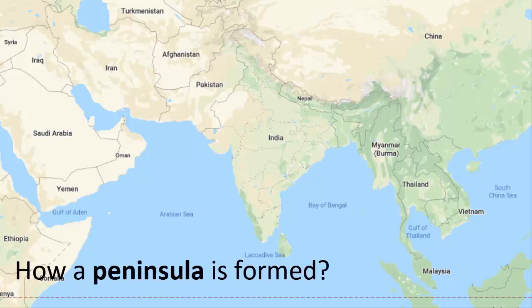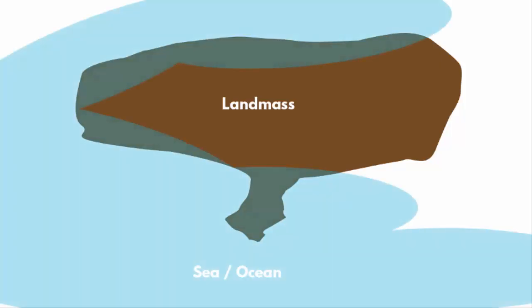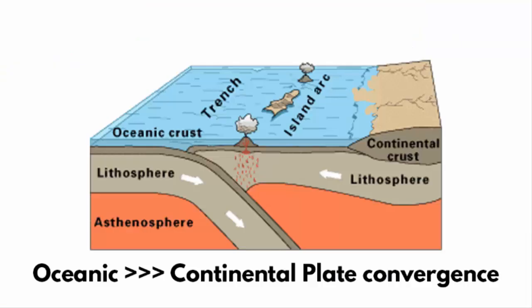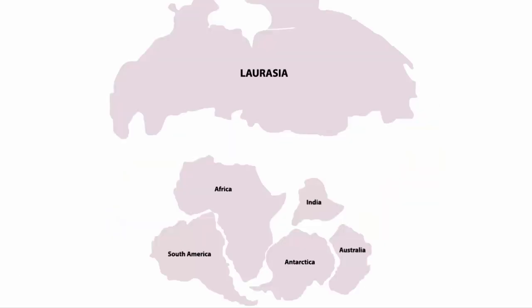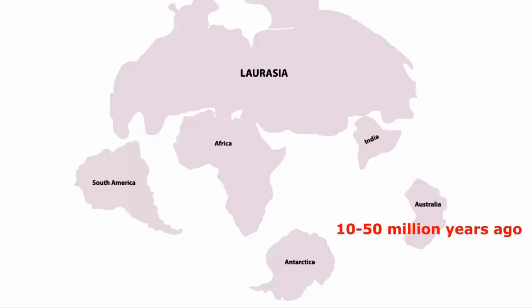Now we come to the main question. How are peninsulas formed? A peninsula can be formed by rising or falling of the sea level that may expose or cover certain portions of land to form a peninsula. A peninsula is also formed due to tectonic activity. Then upliftment or falling of landmass may also help to form a peninsula. A separation of landmasses over millions of years can also create a peninsula.